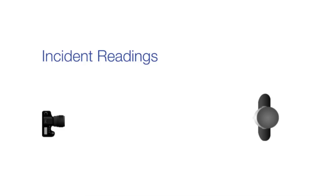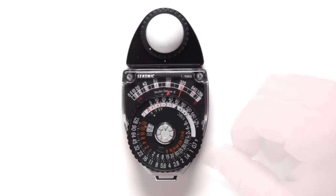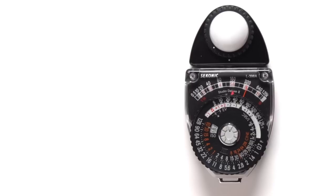For incident readings in normal indoor situations, point the lumisphere in the direction of the camera from the subject's position. Press the silver stopper button to allow the meter needle to move to indicate the amount of light present. Release pressure on the button when the needle stops to trap the needle in place.